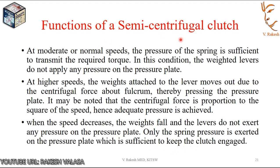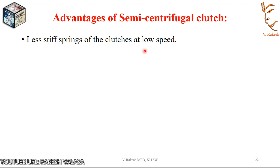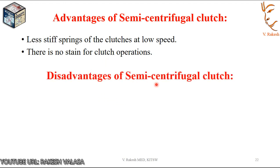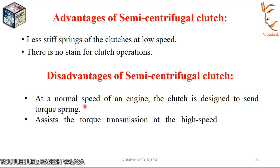Advantages of the semi-centrifugal clutch: less stiff springs are needed at low speed, and there is no strain for clutch operations. Disadvantages: at normal engine speed the clutch is designed to send torque through springs, while at high engine speeds centrifugal force assists the torque transmission.